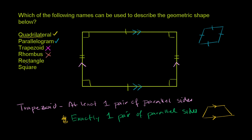A rectangle is essentially a parallelogram that has four right angles. We already established this is a parallelogram, and it also has four right angles — one, two, three, four. So this is a rectangle. Another way to think about a rectangle: opposite sides have the same length and you have four right angles. So this is definitely a rectangle.